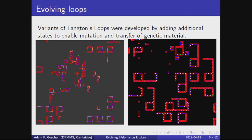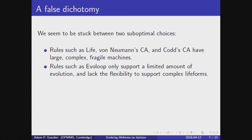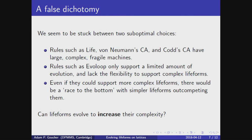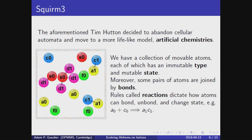What we actually want is open-ended evolution. Tim Hutton decided that instead of a cellular automaton, we should have an artificial chemistry consisting of interacting molecules. The idea is we have a collection of atoms, each of an immutable type represented by a color and a letter, and an immutable state represented by a natural number. They can react according to certain rules, bonding and unbonding in the process.